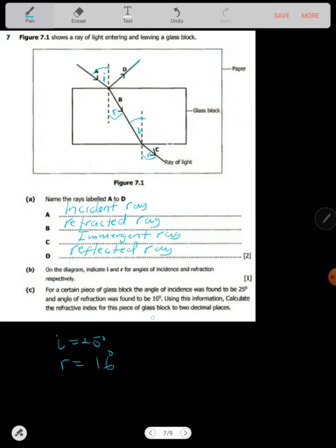calculate the refractive index of this piece of glass to two decimal places. So refractive index, we just learned that it's sine I divided by sine R. So sine I is just sine 25 over sine 16.